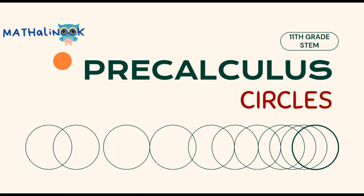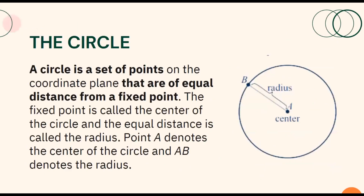Good day everyone! In this video, we will discuss about circles. You have defined the circle before in geometry as a shape. This time, we will dig deeper about this as a conic section. The circle is a set of points on the coordinate plane that are of equal distance from a fixed point. The fixed point is called the center of the circle and the equal distance is called the radius.